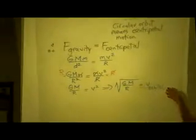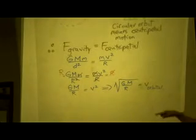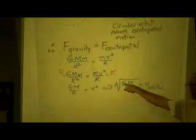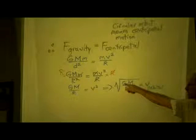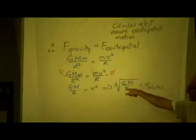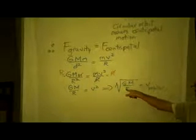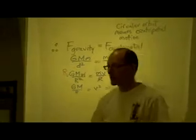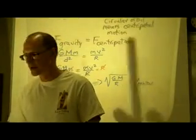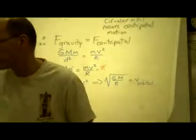So the orbital speed that the Earth is going around the Sun is equal to the square root of G, which is that universal gravitation constant that we talked about last year, times the mass of the Sun divided by the distance between the center of the Sun and the center of the Earth. So what I want you to do right now is calculate what is the speed of the Earth going around the Sun. And I'll have to give you some information.